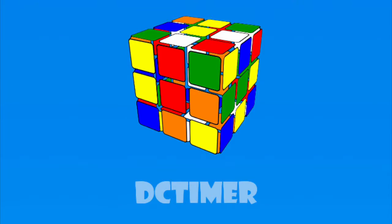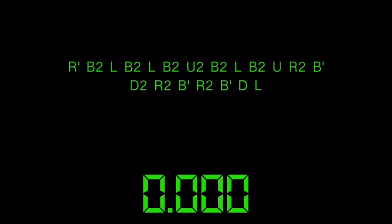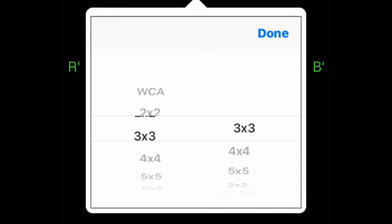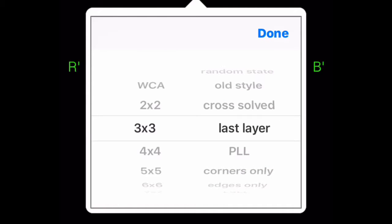To put these methods to the test, I conducted a little experiment. I used a DC timer's function of scrambling only the last layer, and then timed myself using each method. I did an average of five solves using the same five scrambles, and here are my results.